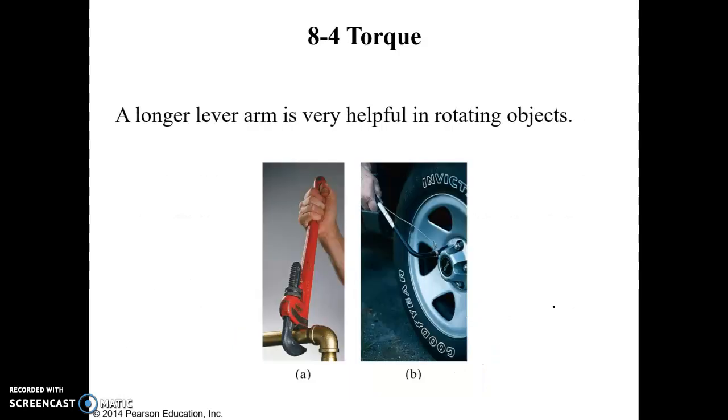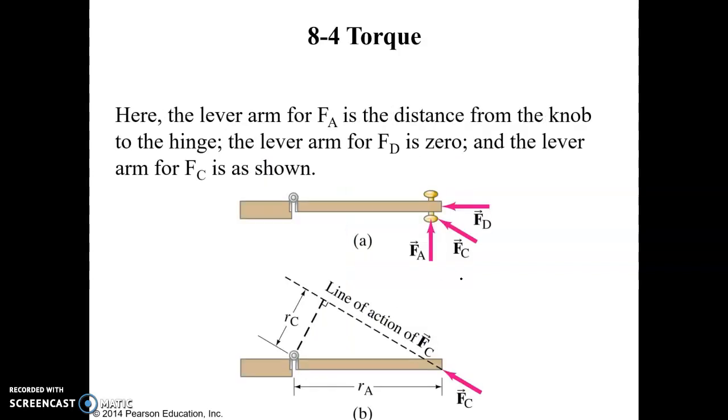So if you think about tools like wrenches, the reason why they have these big long handles is because the longer the handle, the less force is required to generate the same amount of torque. Torque is equal to F times R. So if we have a nice long R, then our force doesn't need to be as big.